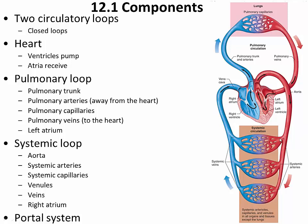Oxygen is lost as we go from oxygenated blood, represented as red, to deoxygenated blood, represented as blue. The deoxygenated blood makes its way into venules first, which are larger than capillaries but still smaller than veins and fairly thin-walled.